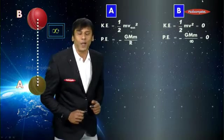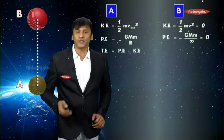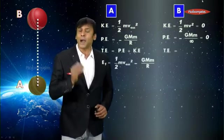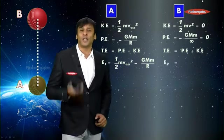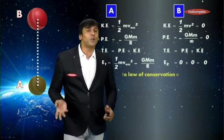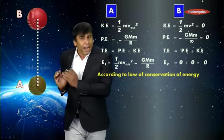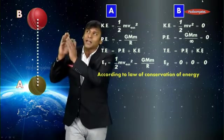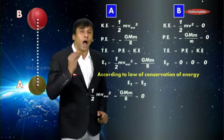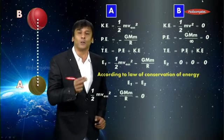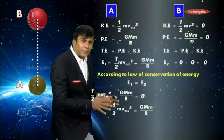Now let us find the total energy at A and total energy at B. The total energy at A is the sum of kinetic and potential energy, which equals half mv² − GMm/R. The total energy at B is zero, since both kinetic and potential energy are zero. There is a law of conservation of energy which says energy cannot be created or destroyed, so the total energy at A must equal the total energy at B. Therefore: half mv² − GMm/R = 0, which gives us half mv² = GMm/R.